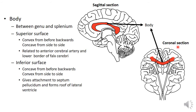The superior surface is also concave from side to side, which you can appreciate in the coronal section. It is related to the anterior cerebral artery and the lower border of the falx cerebri — the dural fold which separates the two cerebral hemispheres.